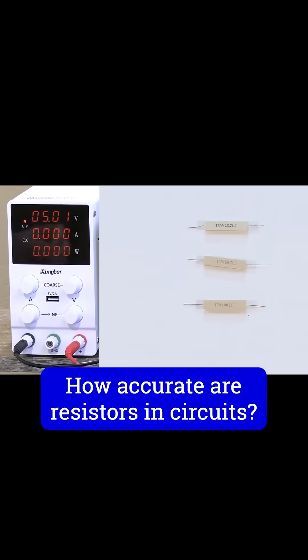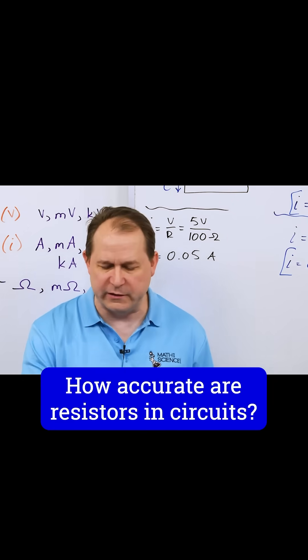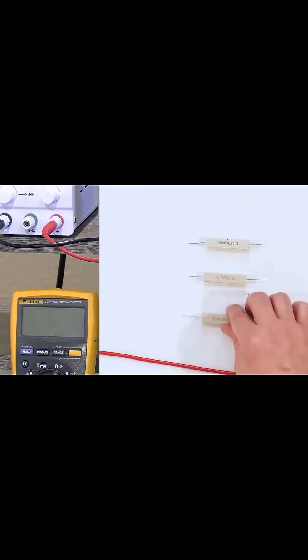All resistors have a tolerance to them, and that means they cannot make them exact. These are not super precision numbers here. These numbers that are printed on these resistors, they're not exact.